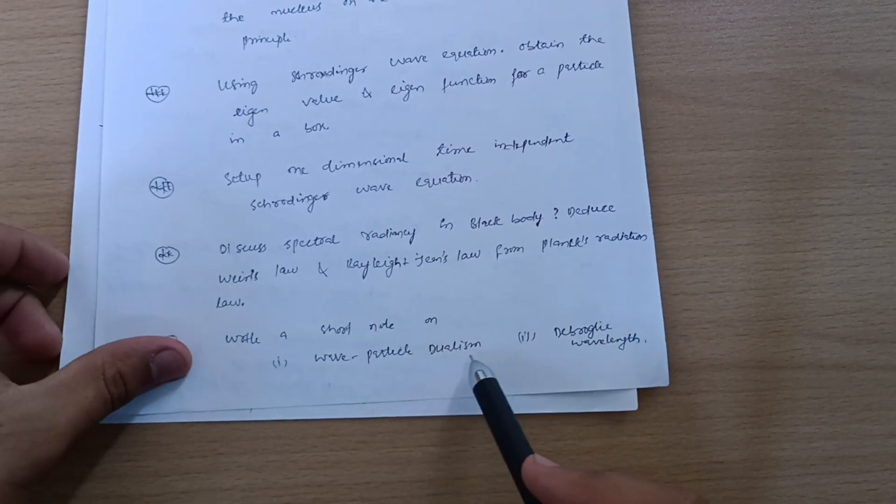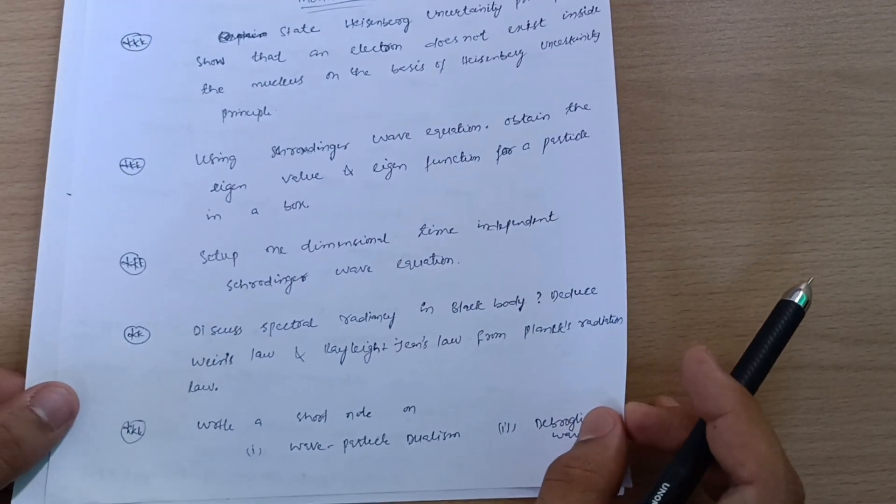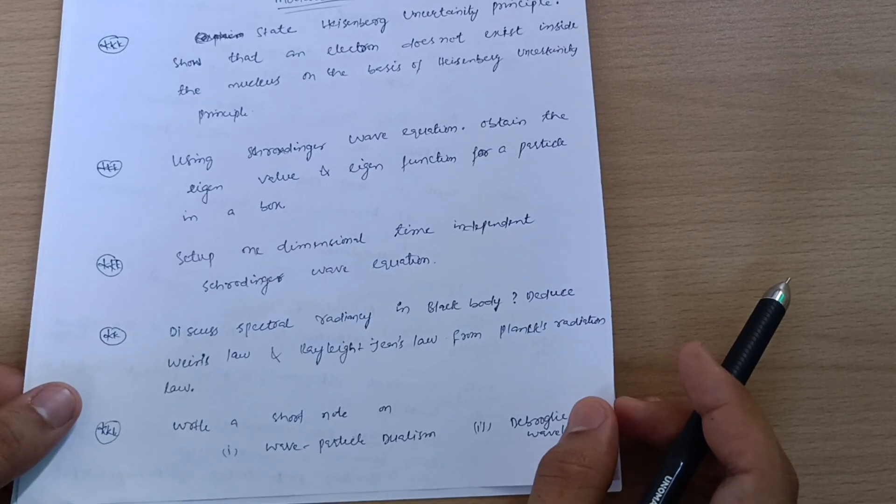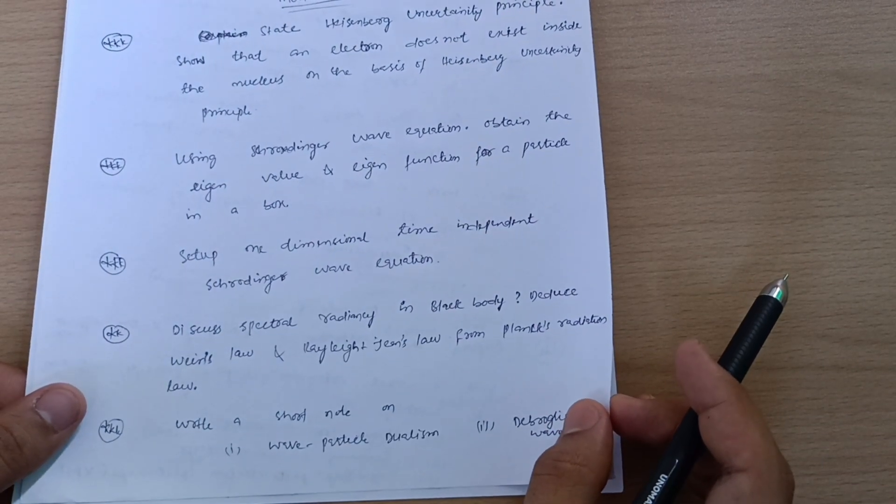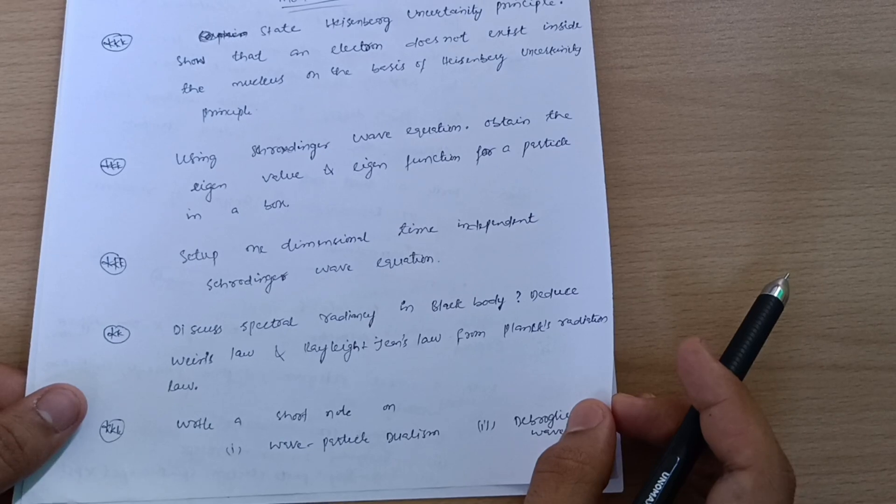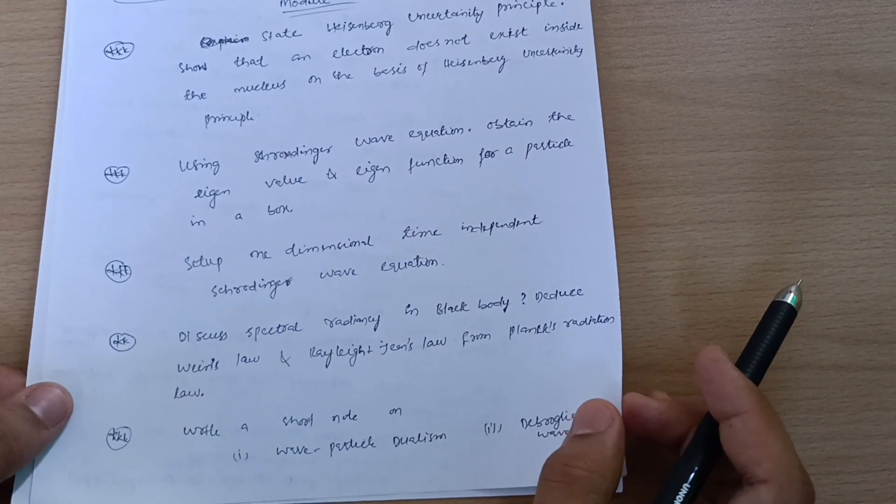Write a short note on wave-particle dualism or de Broglie wavelength. This is all about Module 2. I'm taking only five questions you can easily cover. Otherwise there is also one option: you can go through three modules fully but you have to cover numericals accordingly so that you should be perfect in those three modules to pass. Otherwise you can go through only theoretical portions which I will mention in this video and the rest of the two modules which I will discuss.